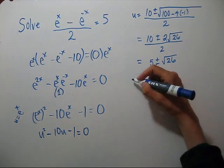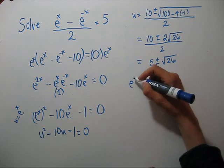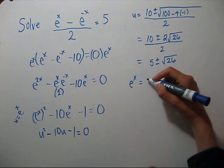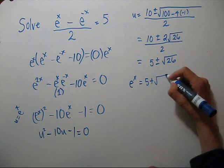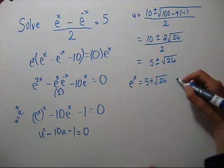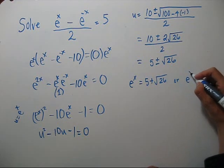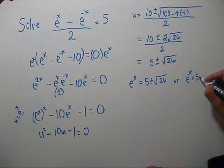Now let's get back to x. So we have e to the x equals 5 plus the square root of 26, or e to the x equals 5 minus the square root of 26.